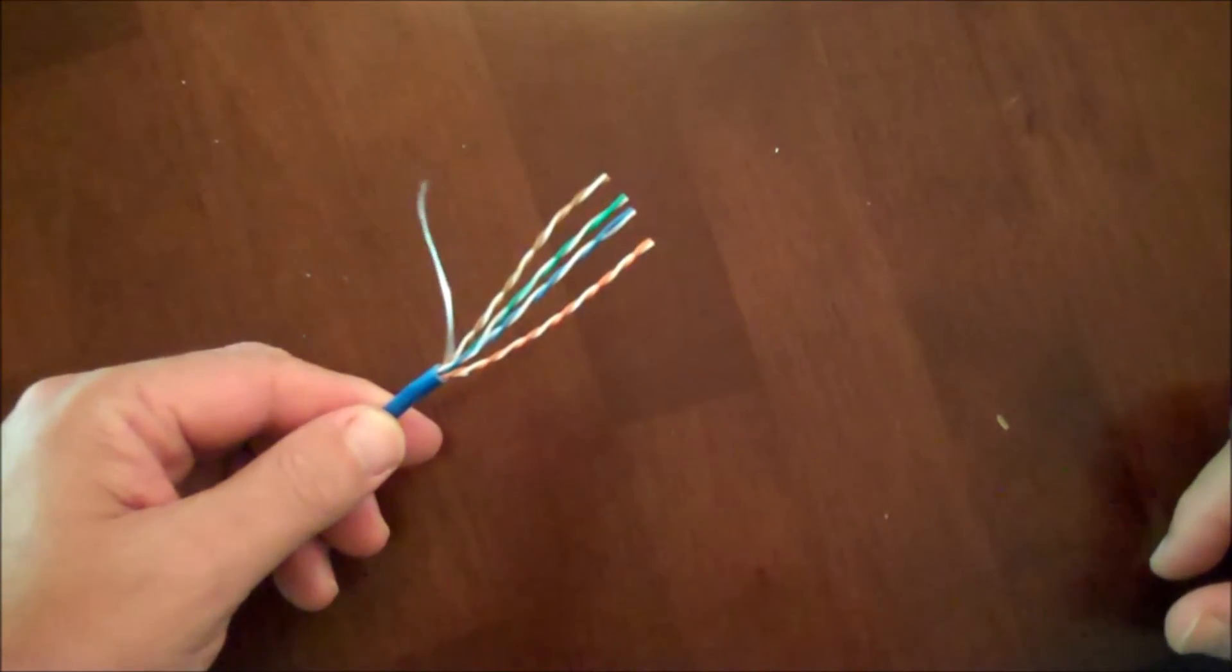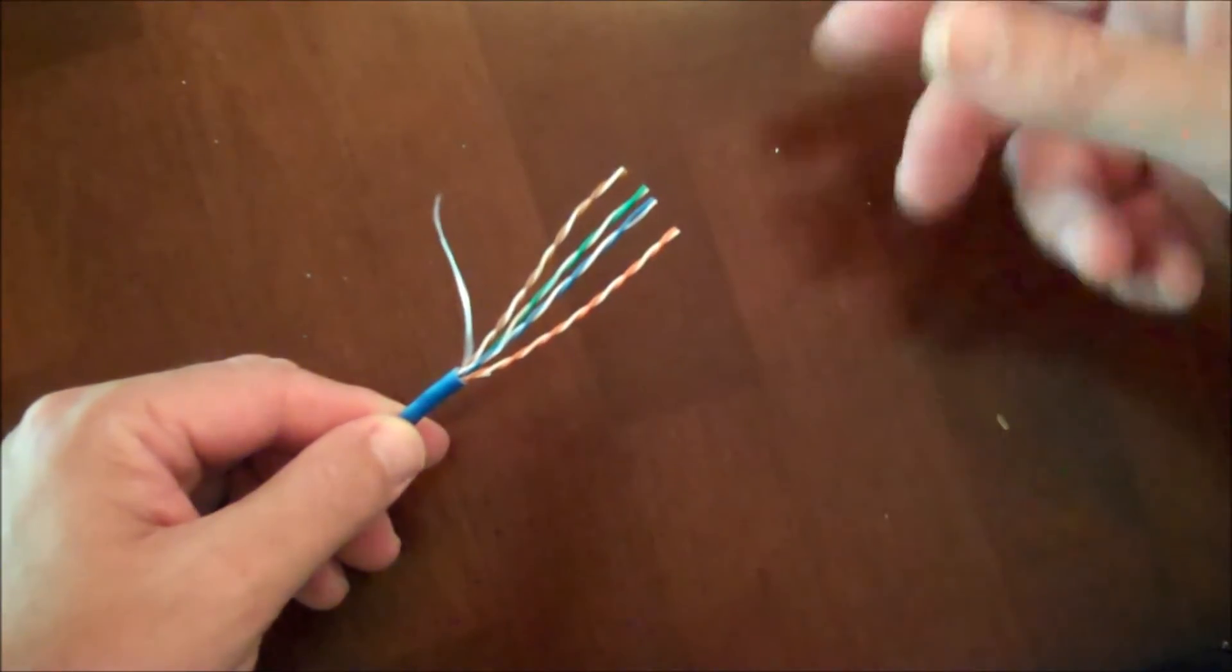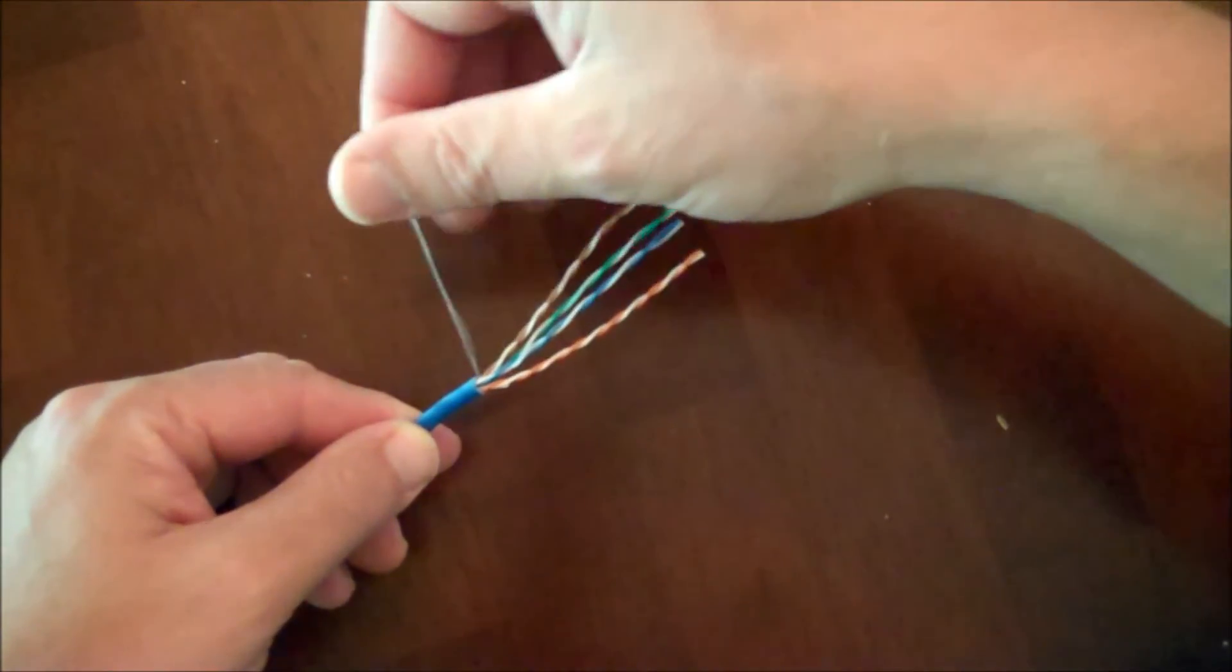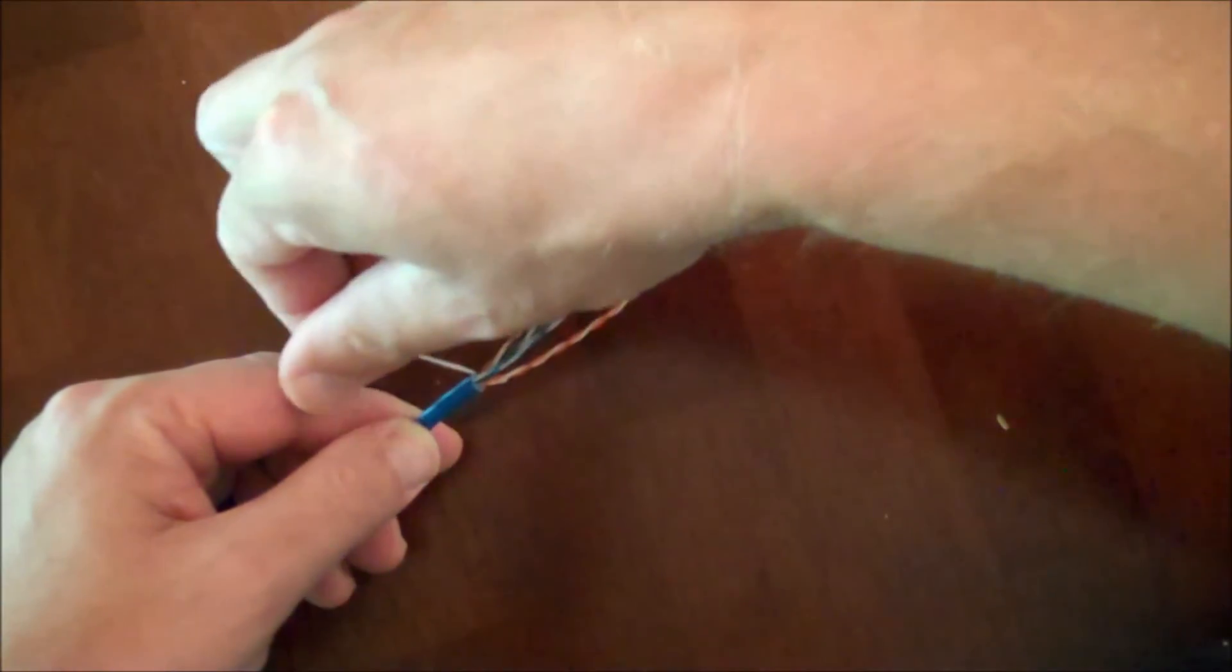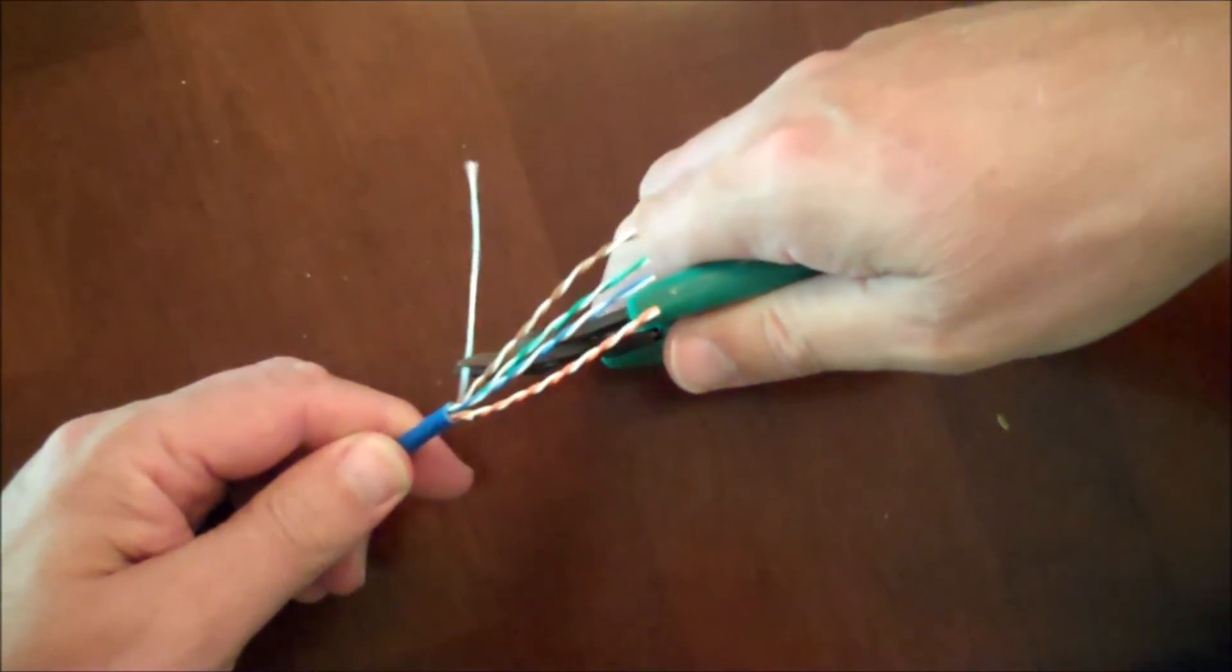However, for illustration purposes on this video, I decided to strip the jacket way back so I can show you the process a little more clearly. There's a string in here. This is used only as a rip cord to open up the blue jacket farther. I'm going to snip that away because it usually gets in the way.